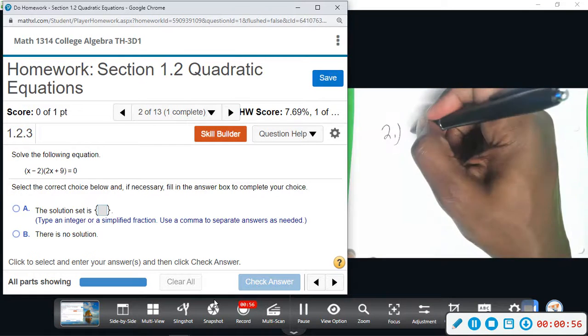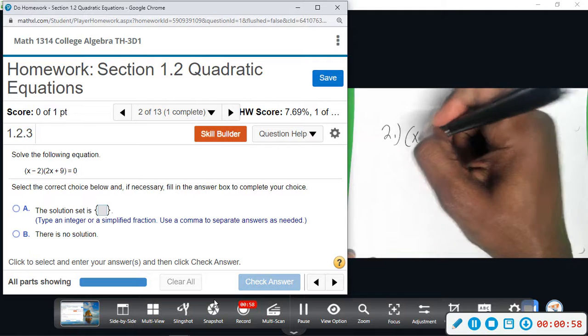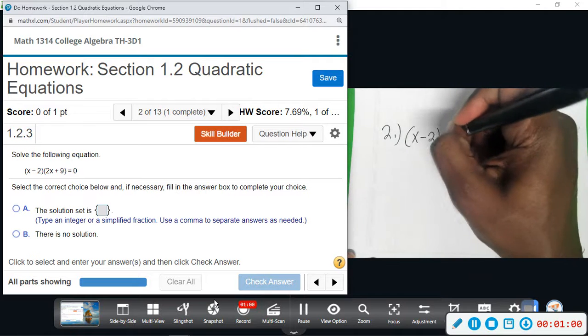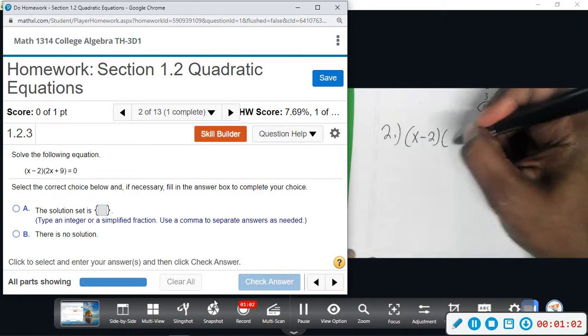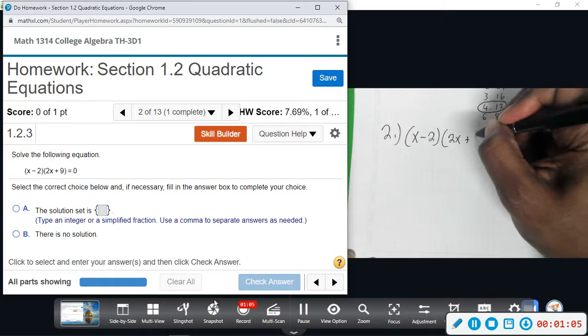So we're just trying to figure out where does it cross the x-axis, what are our intercepts, roots, solutions. And that's what this problem is asking. So we're going to do x minus 2, and then we're going to do 2x plus 9 and set that equal to zero.